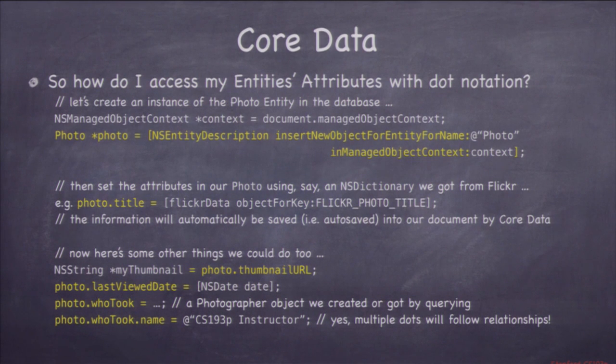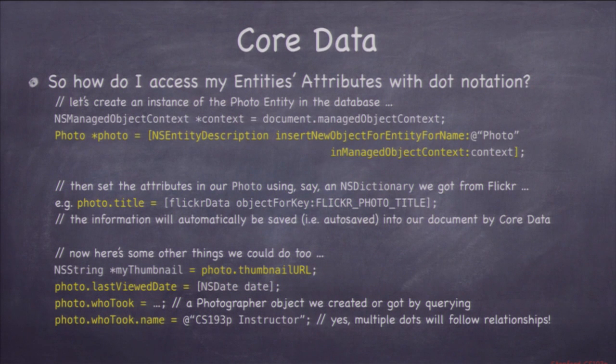A common category we add for NSManagedObject subclasses is a creation method. For example, a category called PhotoCreate could add a method photoWithFlickrData:inManagedObjectContext: that queries the database to see if the photo already exists, returns it if it does, or inserts a new object, initializes it from the Flickr dictionary, and so on. That way someone can call this one class method on Photo to create a new photo from Flickr data. To create a category file in Xcode, go to New File and pick 'Objective-C Category' — name the class 'photo' and the category 'Flickr'. It creates Photo+Flickr.h and Photo+Flickr.m — the standard naming convention.